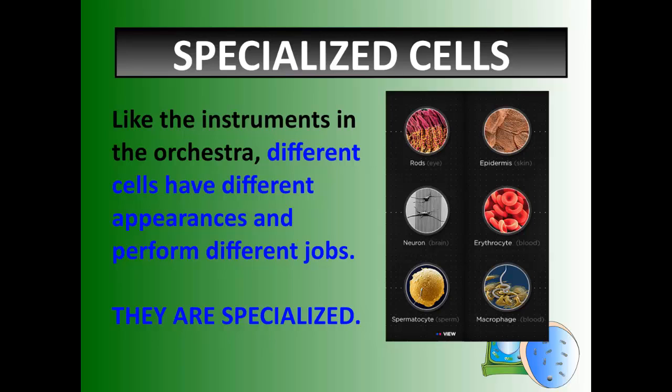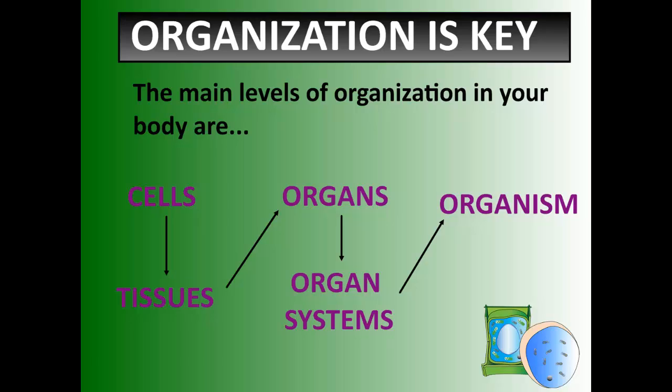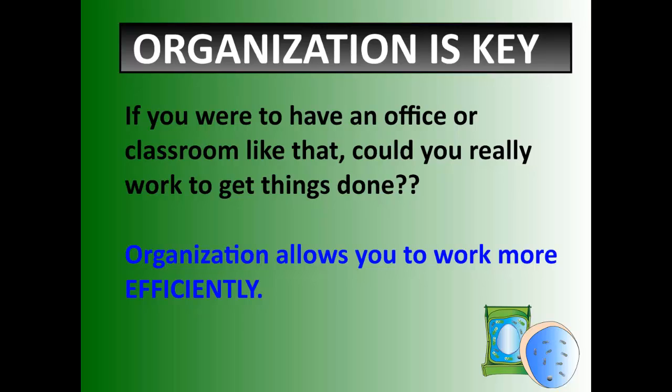There are different cells that do different things — eye, skin, blood, brain, sperm cells, blood cells — all doing very specialized things. The cells in your body help to organize your body: cells group together to be tissues, tissues group together to be organs, multiple organs usually create an organ system, and that organ system is part of the entire organism. Organization allows you and your cells to work more efficiently — one cell has one job, and they're really, really good at it.